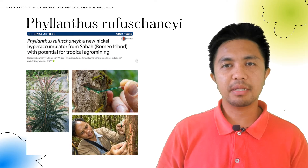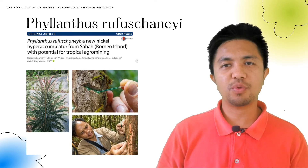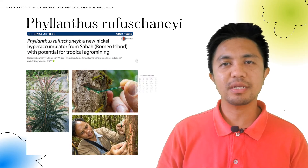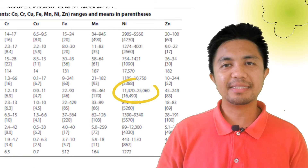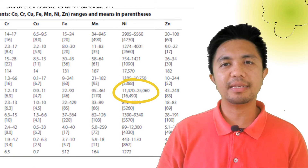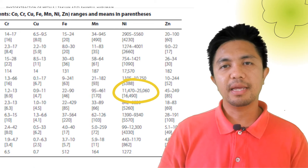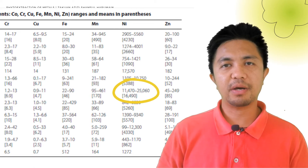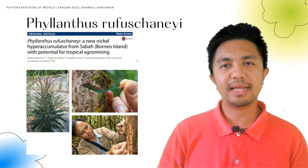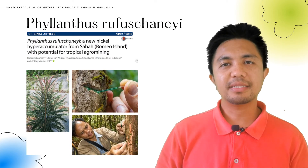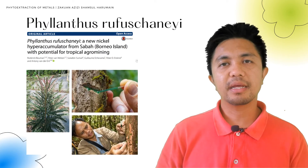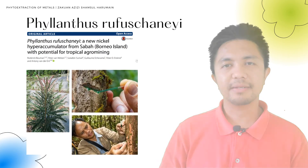This plant is able to accumulate as high as 23,000 micrograms per gram in its above-ground tissues, especially in the old leaves, and is found to be highly selective over other metals such as cobalt, chromium and manganese.